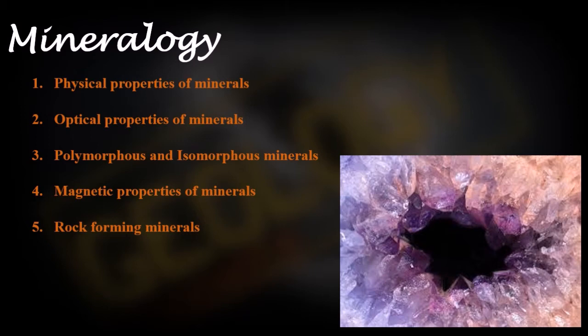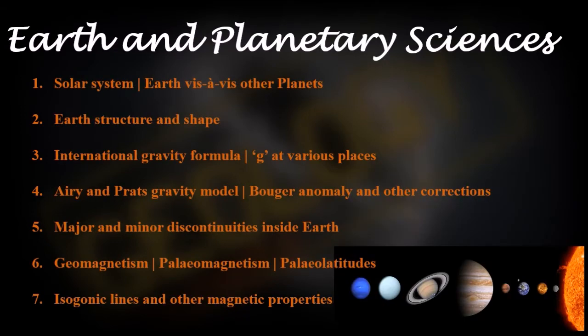Next we'll go to earth and planetary sciences. In this I'll discuss first the solar system and Earth with respect to other planets and all the properties like eccentricity and all other properties related to planet as a whole. Then we'll go into the Earth structure and shape, then we'll discover international gravity formula, the value of g at various places, how it changes.